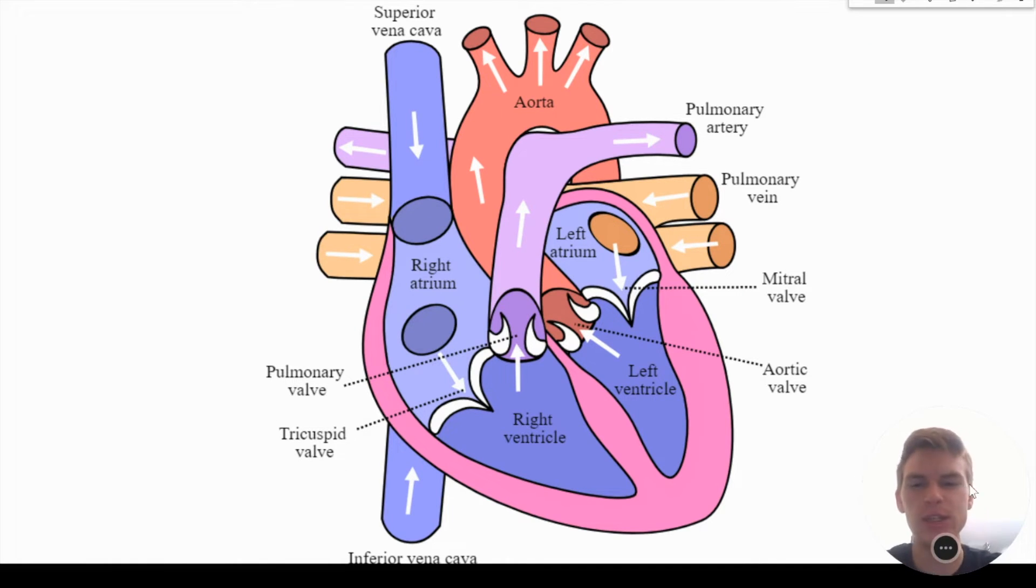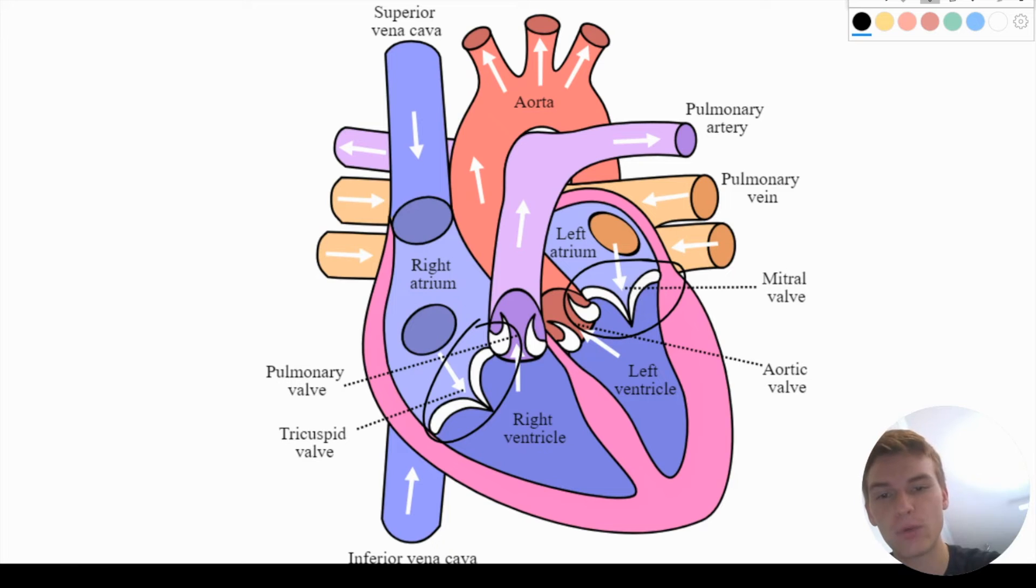So now to understand this question, it's asking us to identify where in this process we're going to hear the first heart sound. There's two heart sounds, the lub and the dub, and the lub comes from when our tricuspid valve and our mitral valve close. They always close and open together. They're called our atrioventricular valves, meaning they go from the atrium to the ventricles.